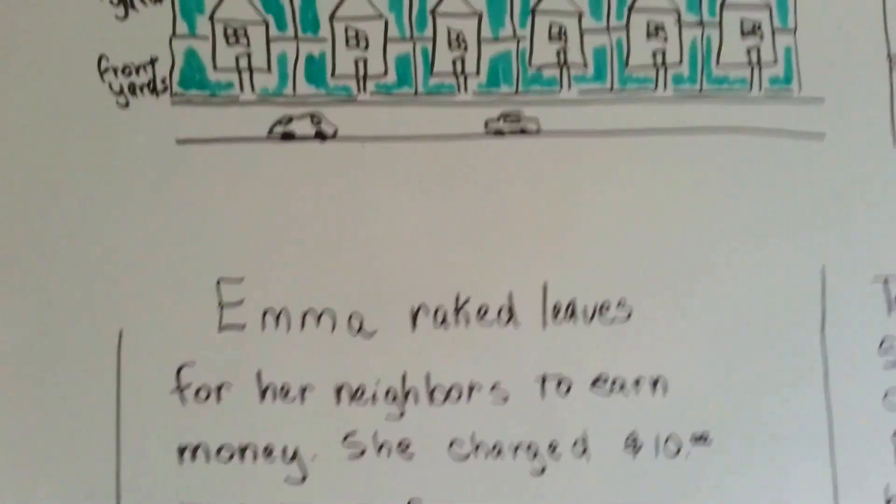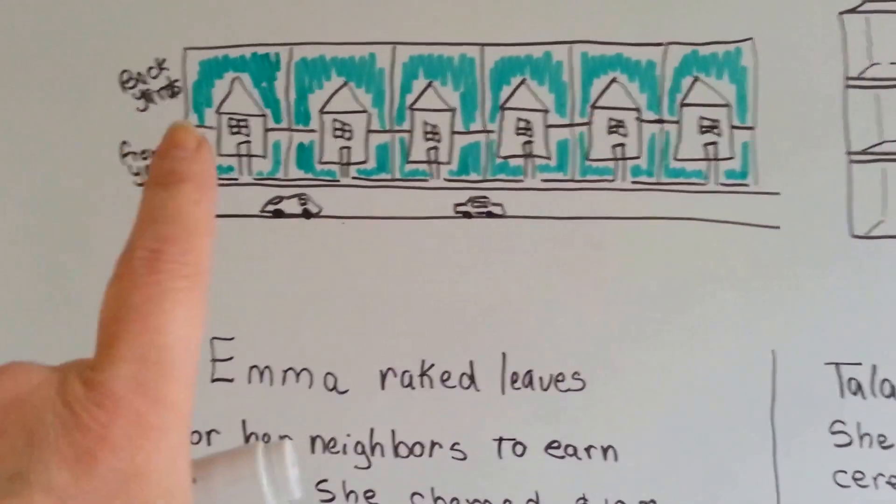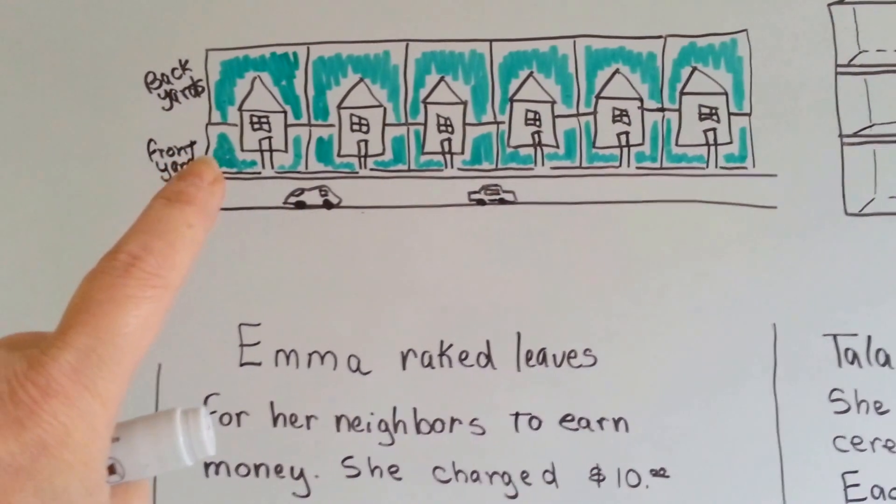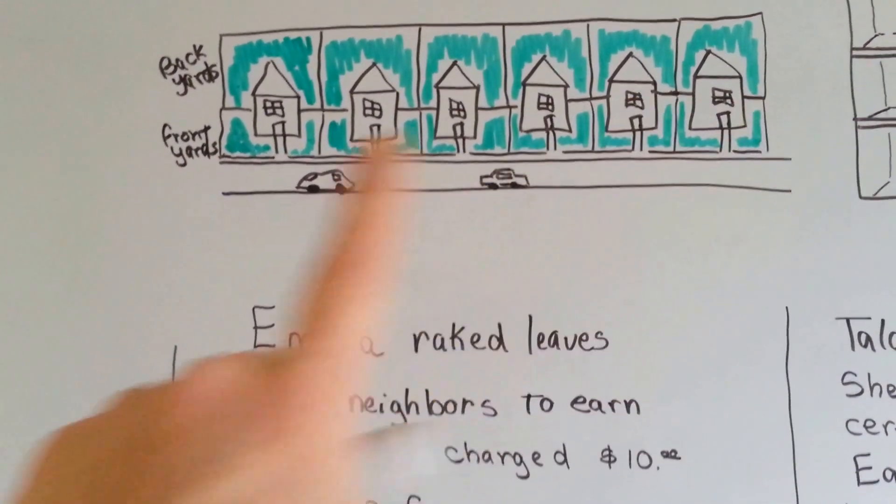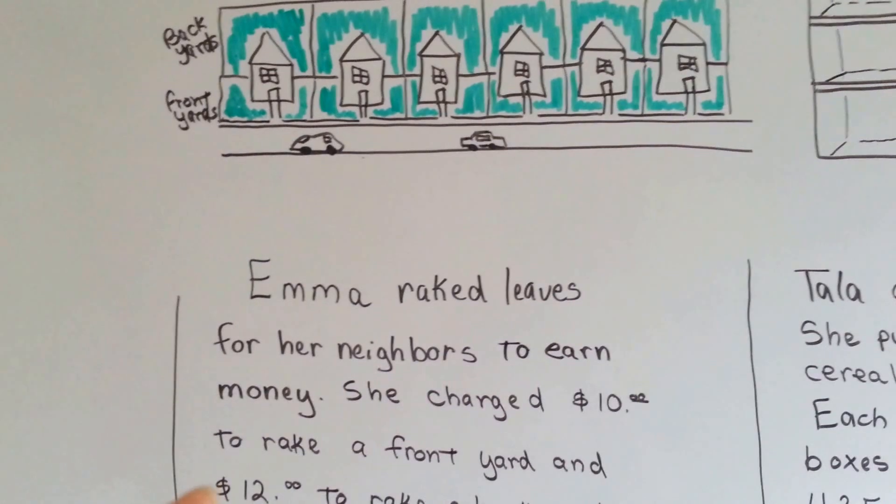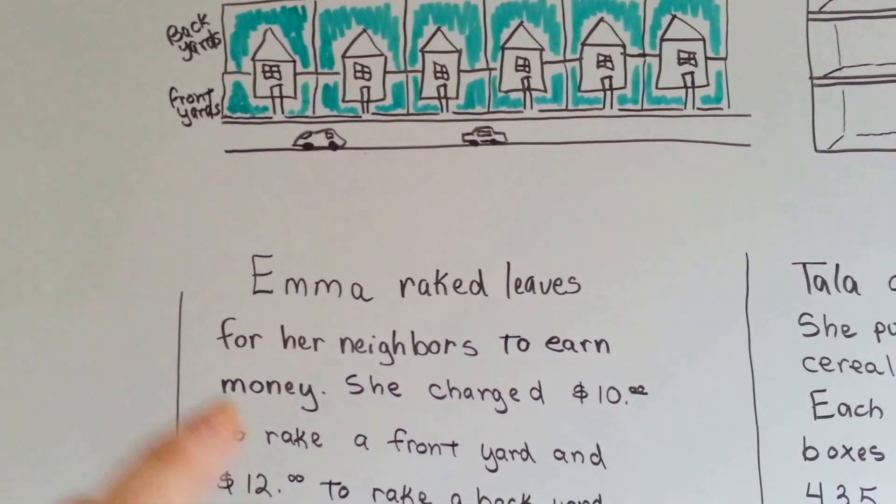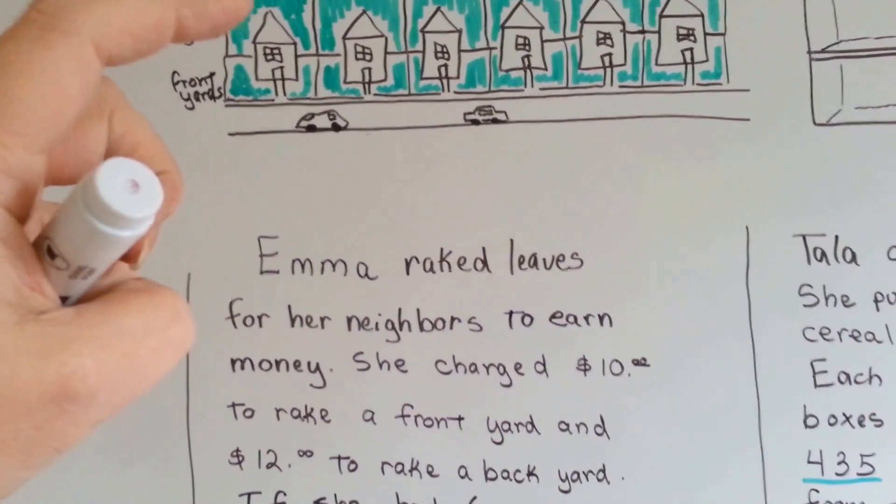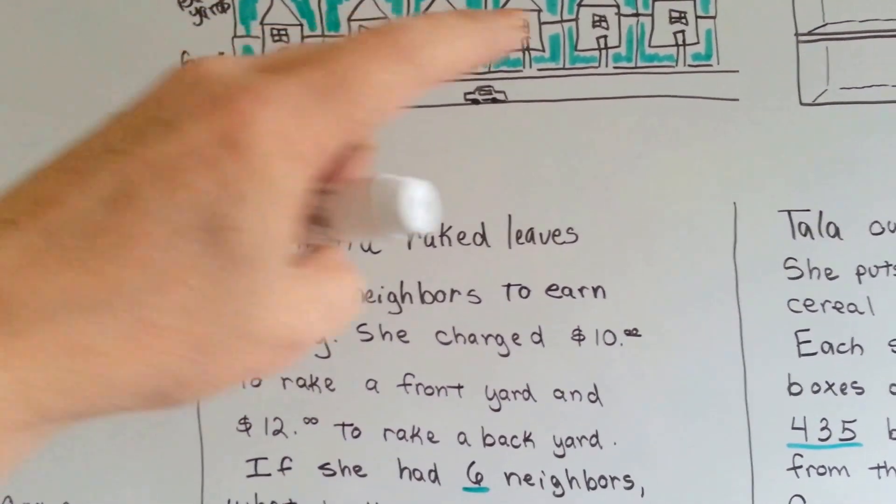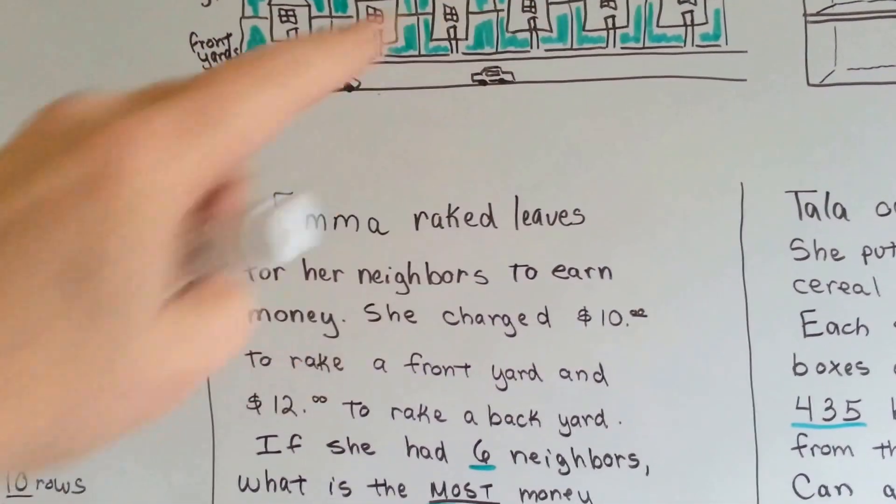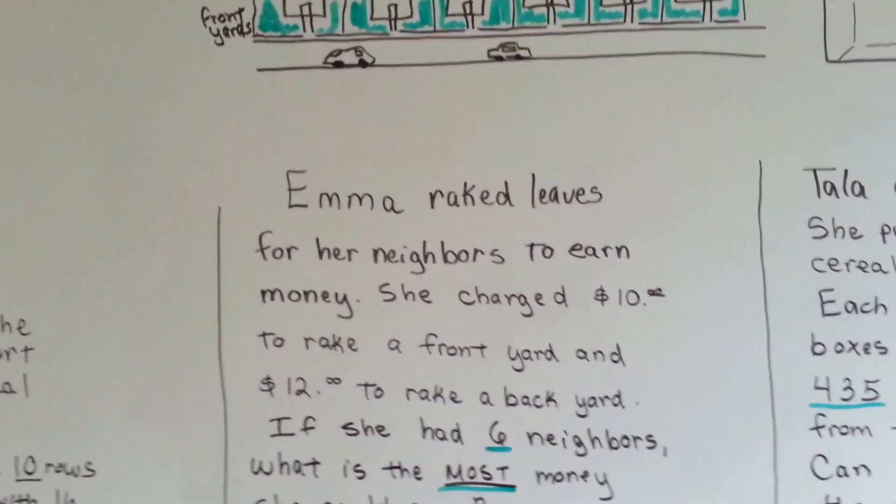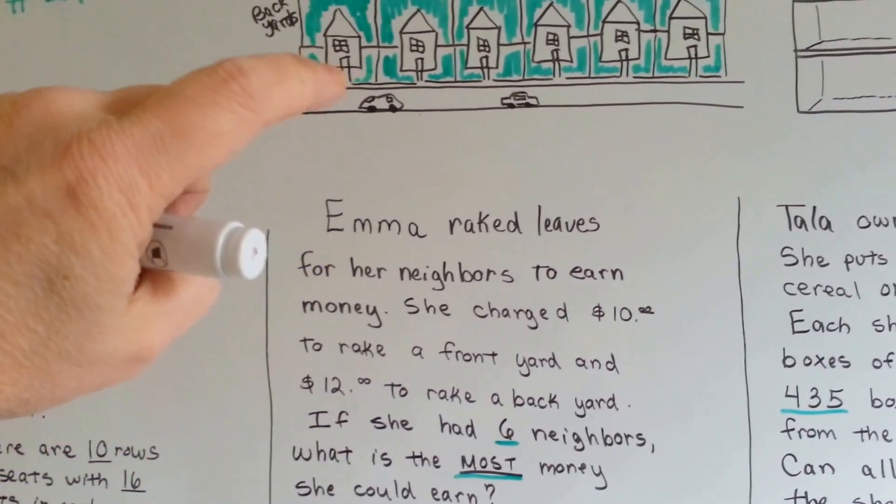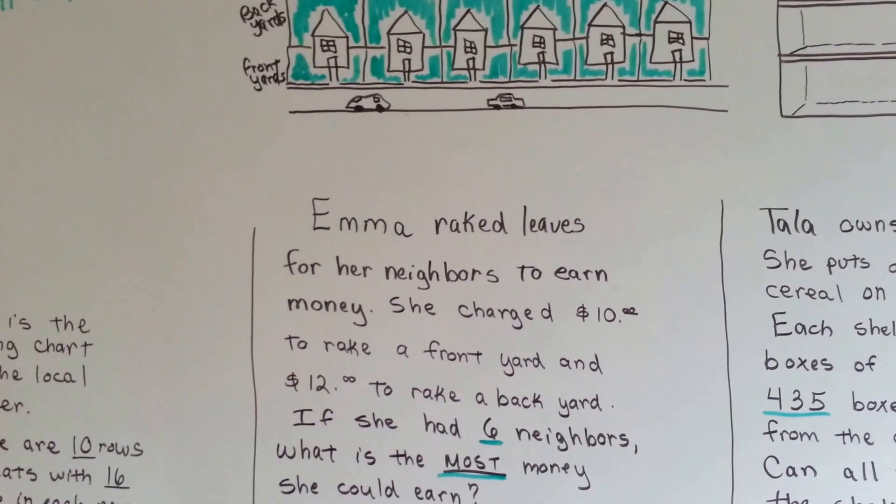Let's try this one. Here's a street and there's some houses and there's backyards and front yards. Emma raked leaves for her neighbors to earn money. She charged ten dollars to rake a front yard and twelve dollars to rake a backyard. If she had six neighbors, what is the most money she could earn?